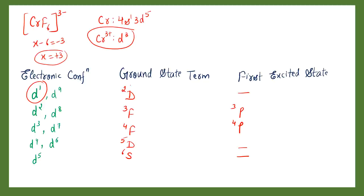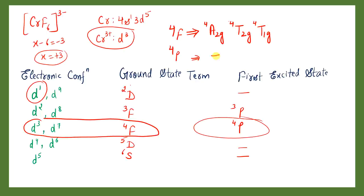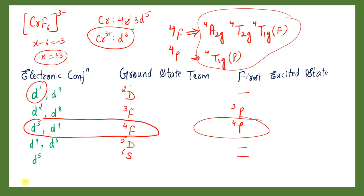We have chromium 3+ with d³ electronic configuration. For d³, the ground state is 4F and the first excited state is 4P. The corresponding Mulliken term symbols for 4F are: A2g, T2g, and T1g. For 4P the corresponding Mulliken term is T1g. To differentiate them, we label the 4F-derived one as T1g(F) and the 4P-derived one as T1g(P).